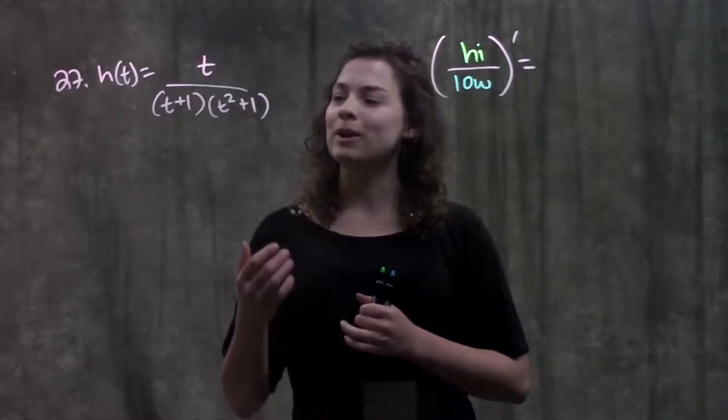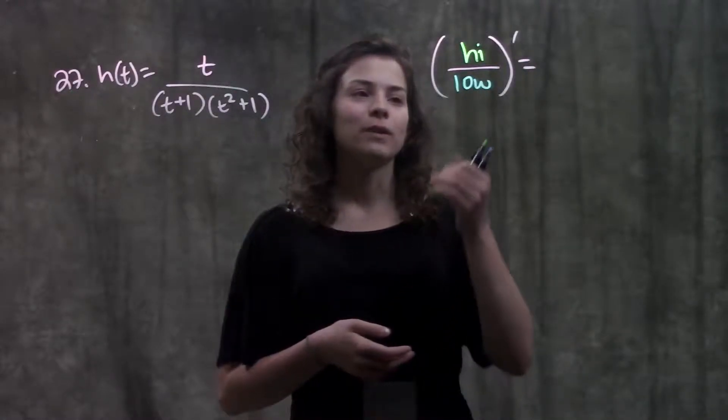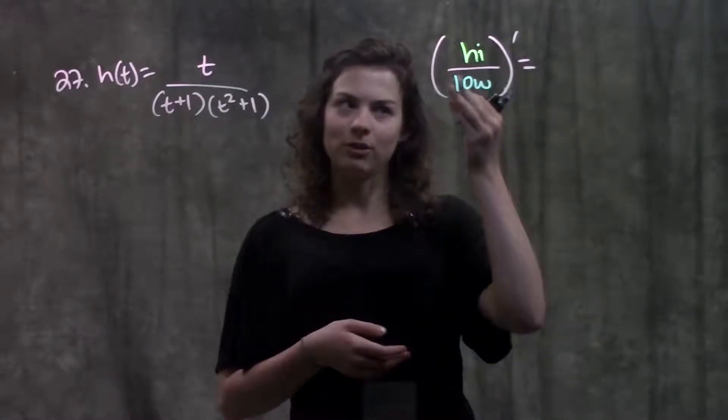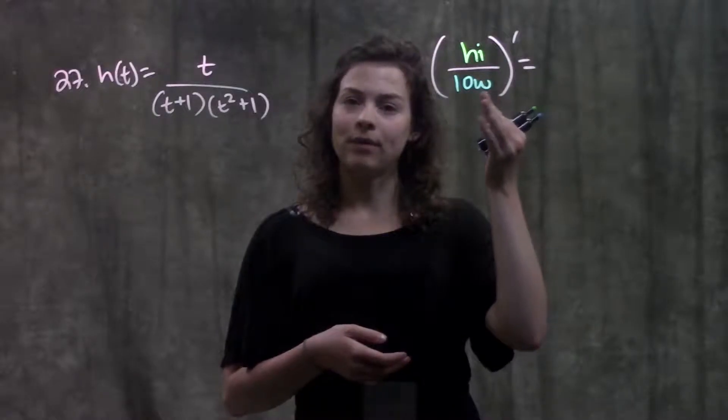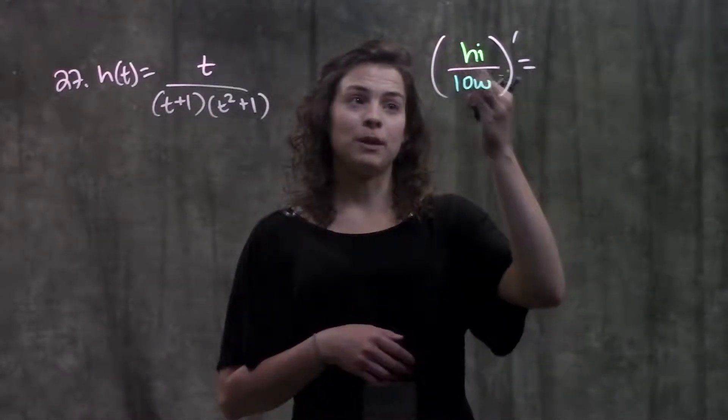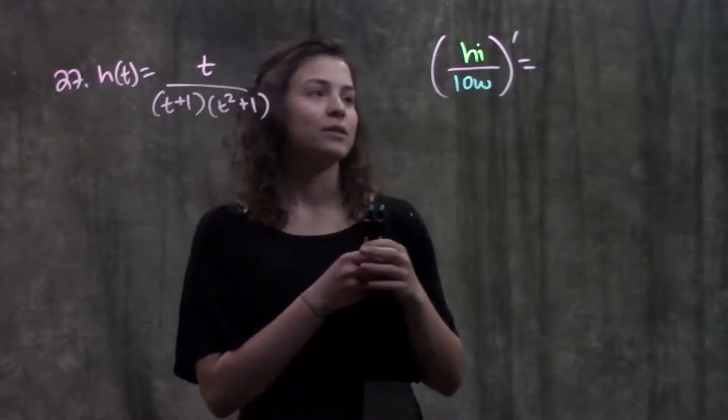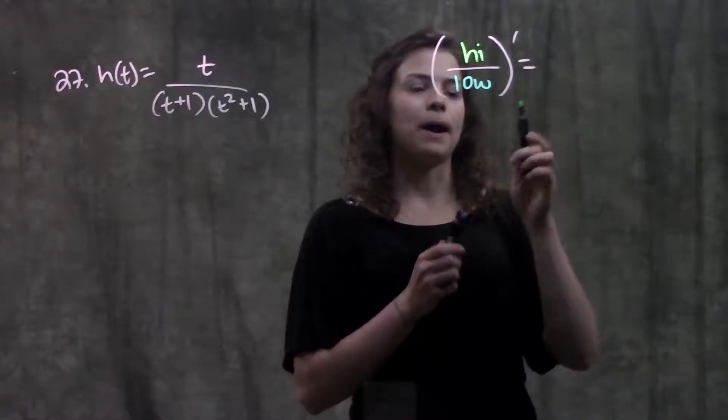So first, before we go through this example, let's go through what quotient rule tells us. If we have a function, it's a quotient of two other functions, and we're taking the derivative of it, we'll just need to follow this pattern. And for this pattern, I labeled my numerator as my high and my denominator as my low.